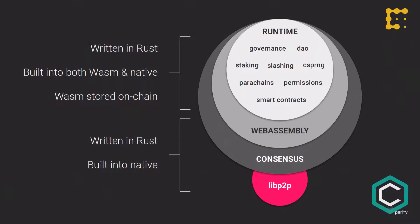Substrate is written in Rust. We have the runtime, which is essentially the implementation of the state machine — what does the blockchain do — implemented as WebAssembly code. WebAssembly is interpreted, fast, and a descendant of JavaScript originally intended for the web. We found it has practical applications for blockchain virtual machines. The key idea is that you can do on-chain upgrades: the chain can change its code mid-flight, and all nodes will start executing the new WebAssembly code.